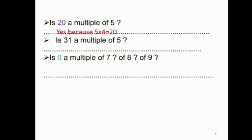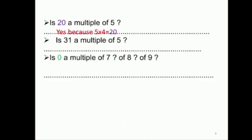هل أنا هذا الشي إذا ضربته بـ five بيعطيني thirty-one؟ شو بيعطينا thirty-one؟ موجود شيء بالـ table للـ five؟ في عنا thirty، ما عنا thirty-one — معناه thirty-one is not a multiple of five.